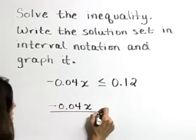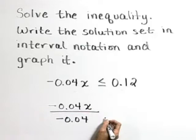So the left side, negative 0.04x, divided by negative 0.04.